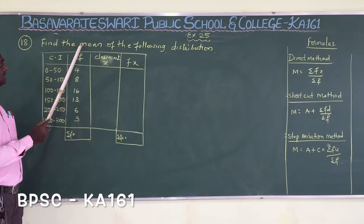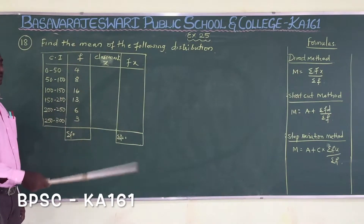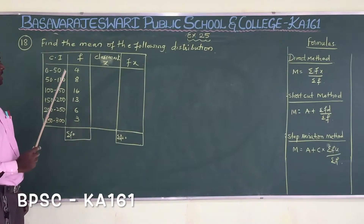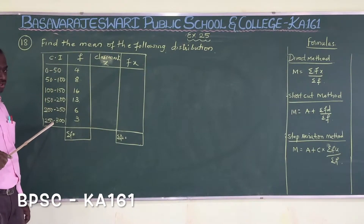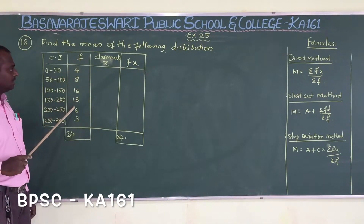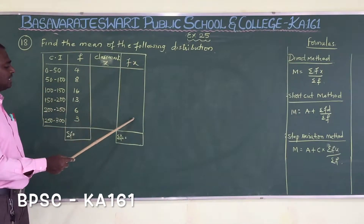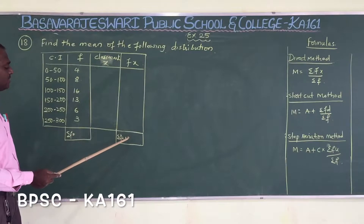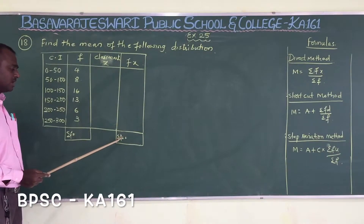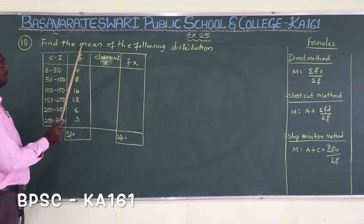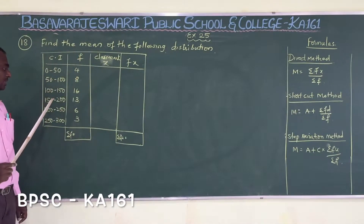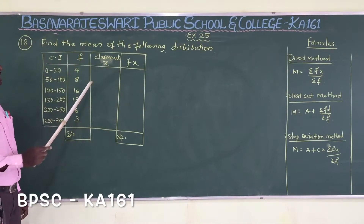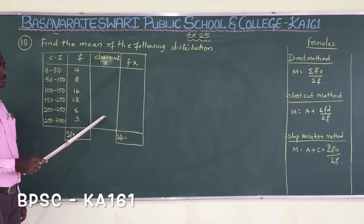In previous sums we also found the mean using the direct method, but there only scores x and frequencies were given — we found fx and sigma fx directly. But here class intervals are given, so compulsory we have to take the class mark.